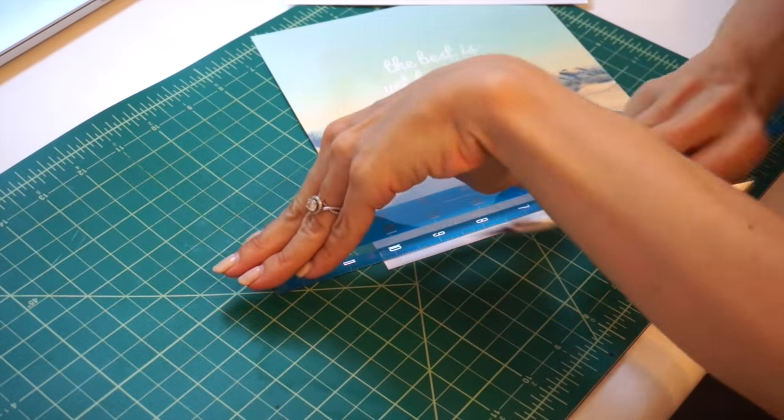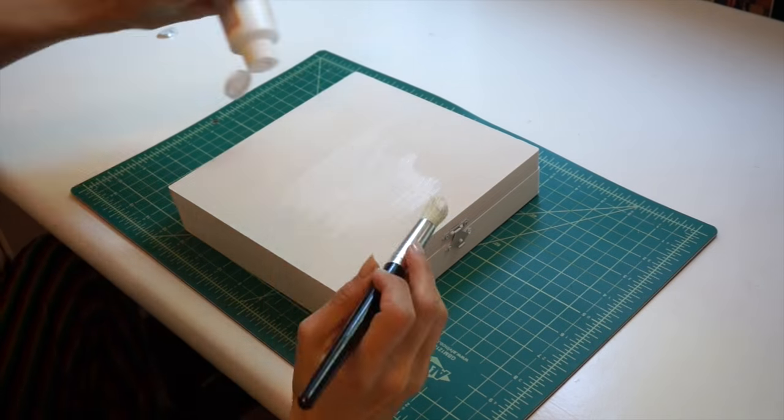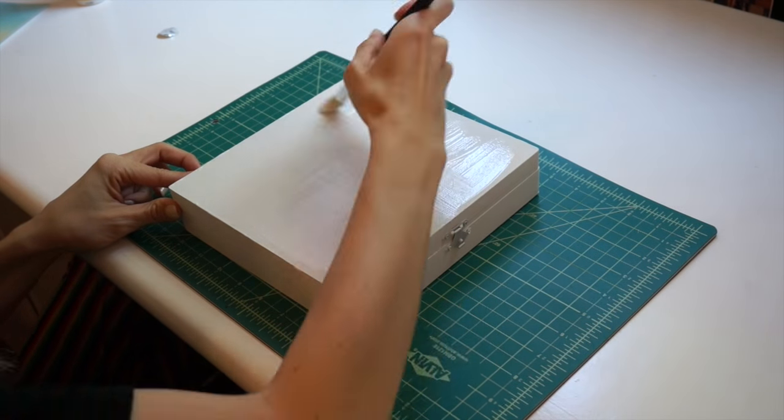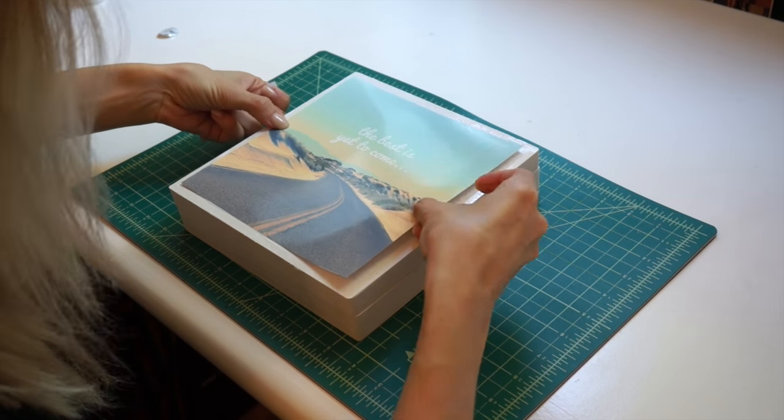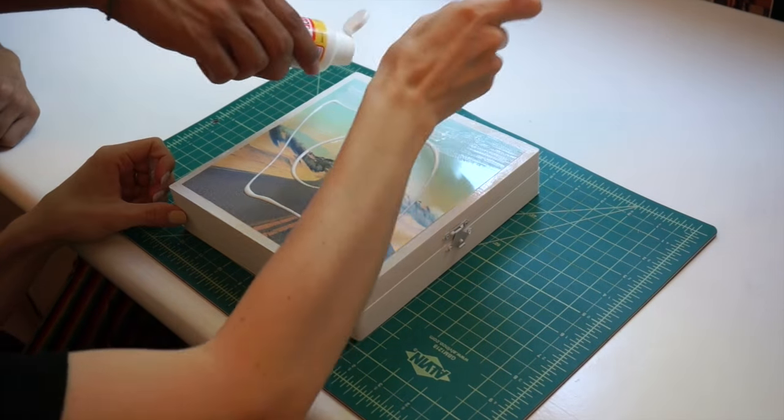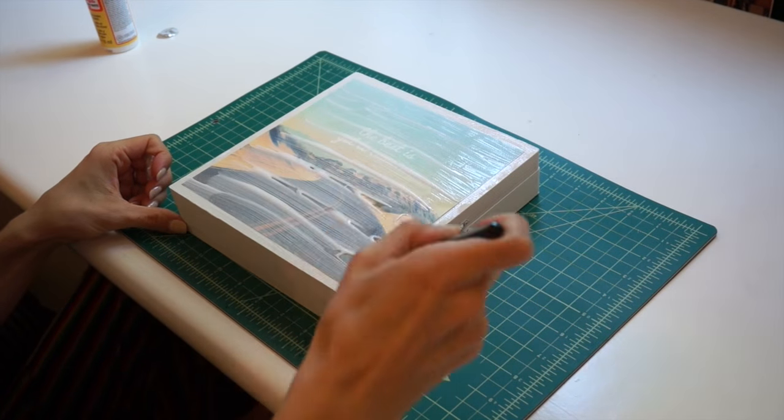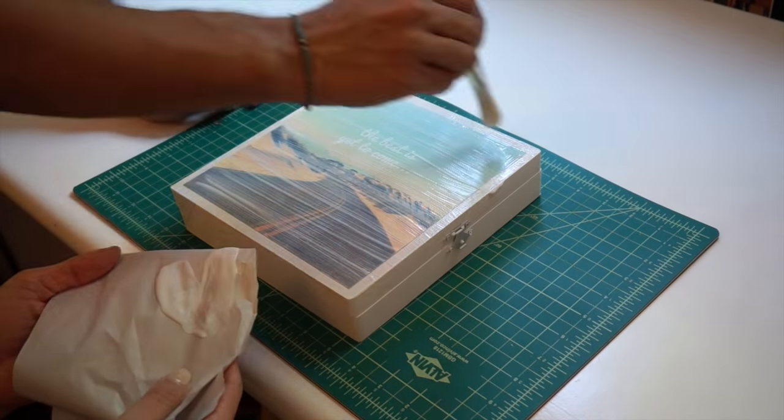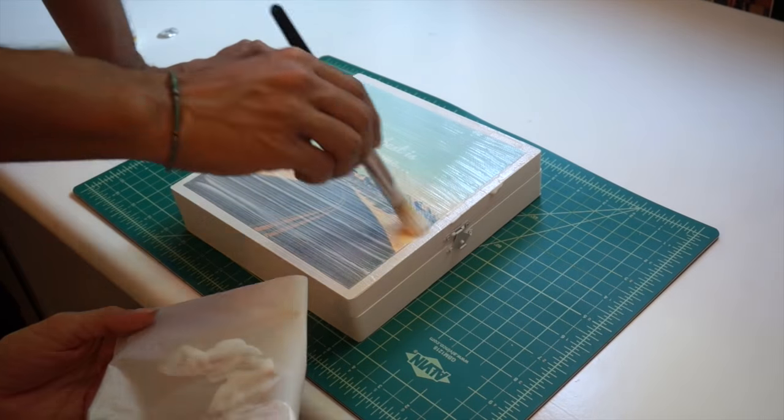Once you get your photo, cut it down to size and we are going to adhere it to the box with some Mod Podge. This stuff is so fun to work with. Put a little bit under the picture and then a little bit over, or a lot. If you find that you put too much Mod Podge on, don't worry. You can just go back through with a paintbrush and wipe it off into a paper towel.